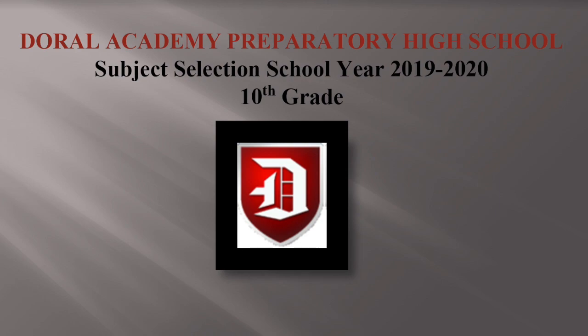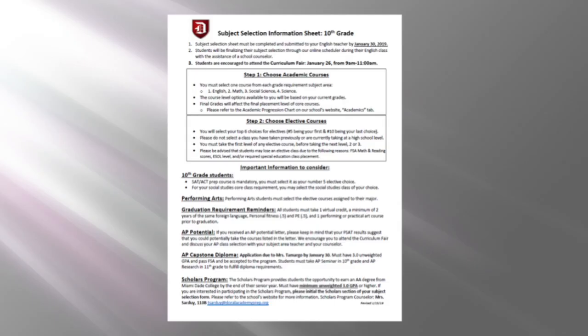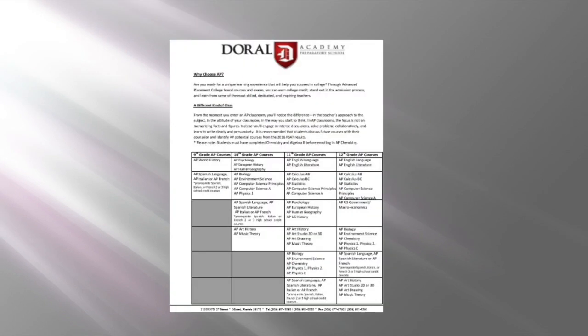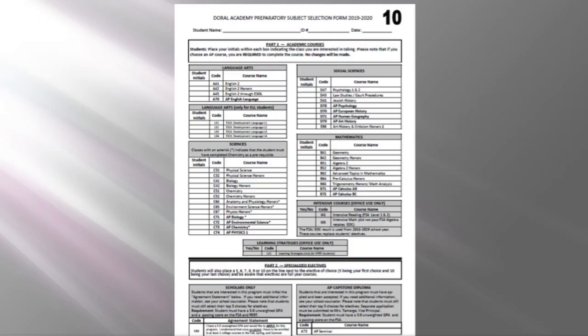Students, this presentation will guide you in the steps for subject selection for the 2019-2020 school year. You have received a pocket that includes the following: the subject selection information sheet for your grade level, the YAP handout which gives you an overview on what AP courses are about, a list of the AP courses that are available, and lastly, the subject selection sheet for you to select for next school year.